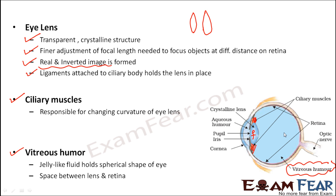Think of it like a balloon — when you fill a balloon with water, the water maintains the shape of the balloon. When you remove the water, the balloon deflates. When you inflate it with air, the air maintains the shape again. Similarly, this jelly-like vitreous humor fills the entire space between the lens and the retina and maintains the spherical shape of the eye.